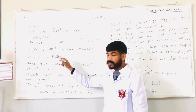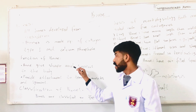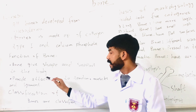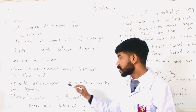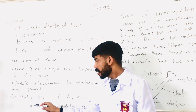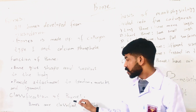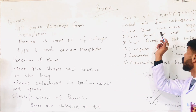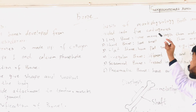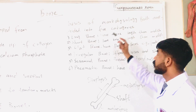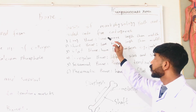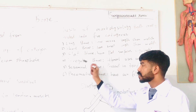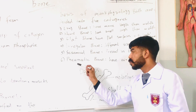The function of bones: bones give shape and support to the body, and provide attachment to tendons, muscles, and ligaments. Bones are classified on the basis of morphology and divided into five categories: long bones, short bones, flat bones, irregular bones, sesamoid bones, and pneumatic bones.